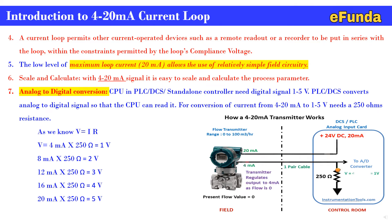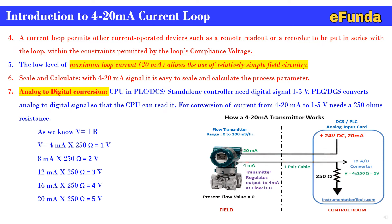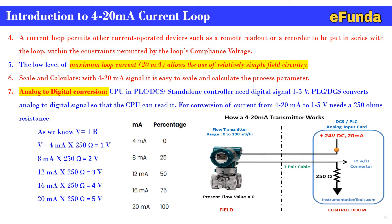Continuing the calculations: 8 milliamp into 250 ohm gives 2 volts, 12 milliamp into 250 ohm gives 3 volts, 16 milliamp into 250 ohm gives 4 volts, and 20 milliamp into 250 ohm gives 5 volts.